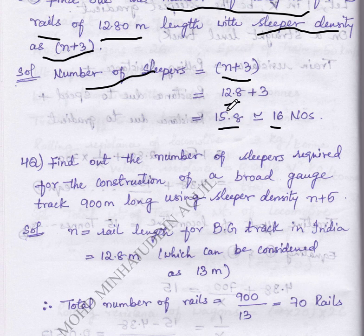So always we have to write as 16 or 15 or 14 like this. Don't write 15.8 or 14.6. The number of sleepers is 16.